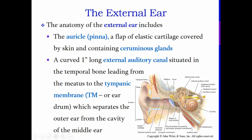Your pinna or auricle funnels sound waves, which travel down your ear canal and then strike your tympanic membrane or eardrum, causing it to vibrate — very similar to a drum skin when struck with a drumstick. Those vibrations are then passed on down the line through the middle ear structures.